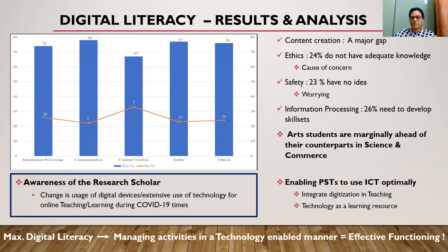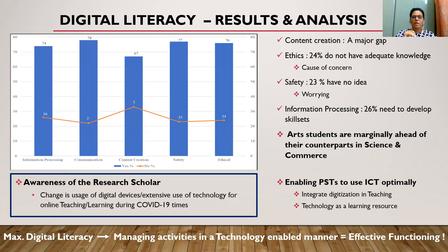Coming to the digital literacy results: content creation seems to be a major gap. Content creation essentially involves the subject matter you are about to teach students, and one needs to be innovative here. Ethics and information processing are also areas of concern, as users do not have adequate knowledge in these areas. More than 25% need to develop their skill sets. On an overall basis, art students are marginally ahead of their counterparts in science and commerce. We need to integrate digitization into teaching activities, and PSTs need to be digitally literate so that they can make use of ICT optimally.